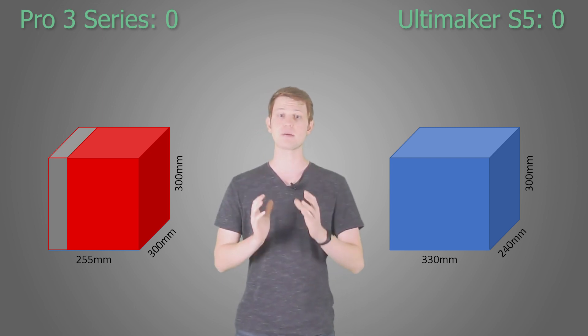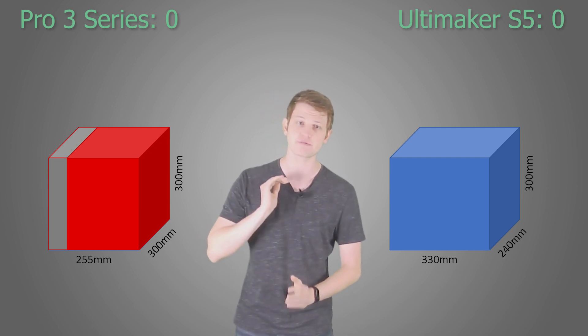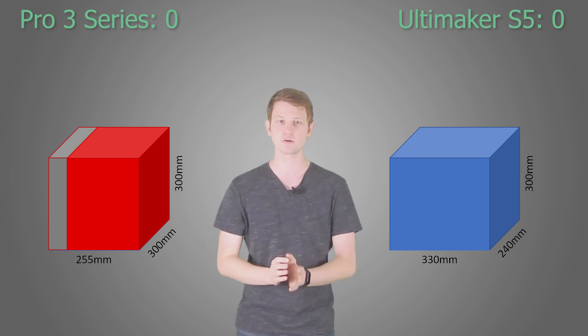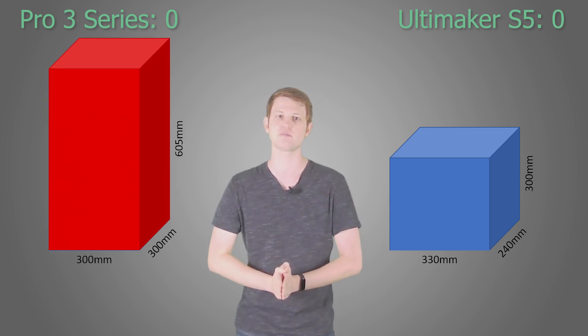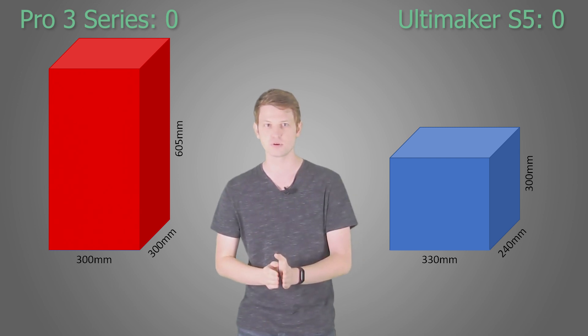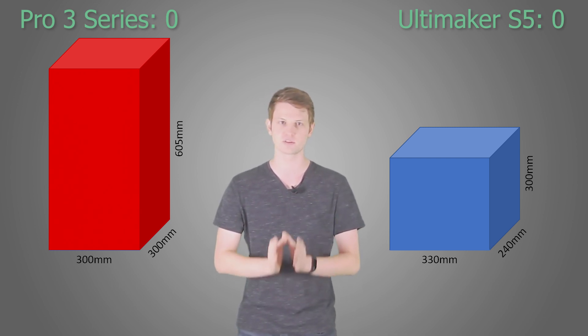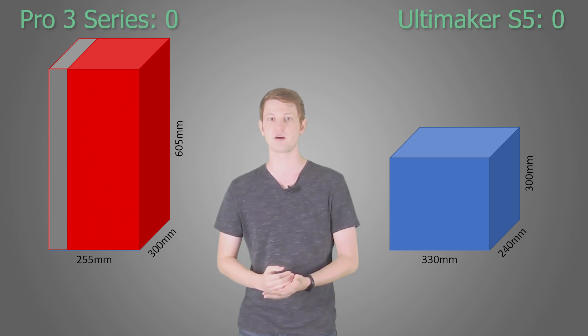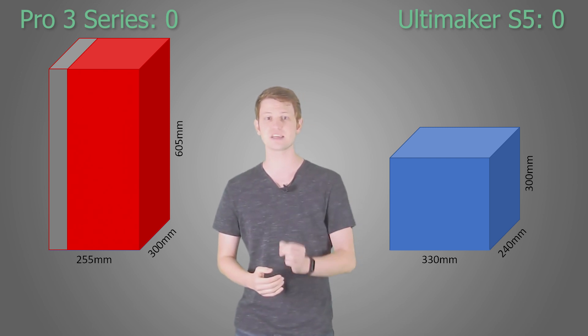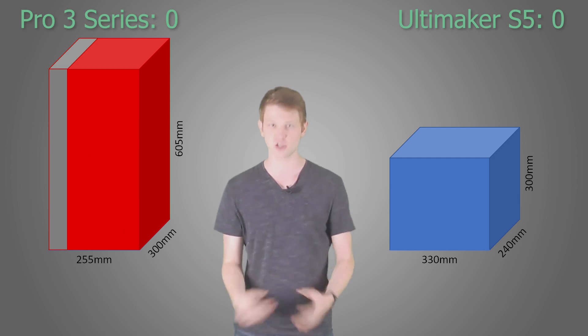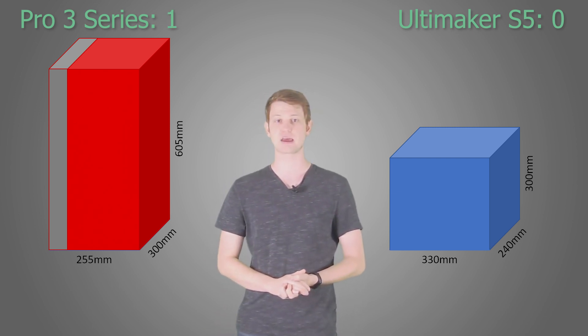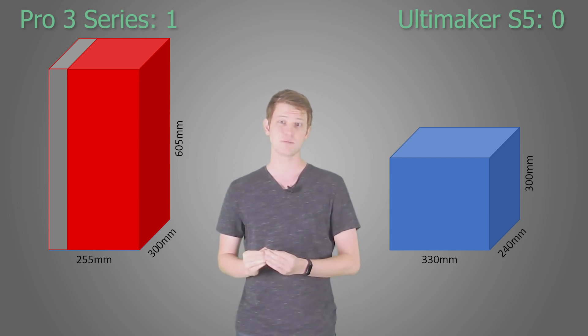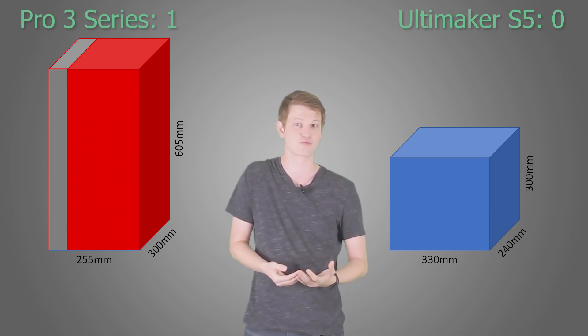However, the Pro 3 Plus adds another 30.5 centimeters along the Z-axis, for a whopping 30 x 30 x 60.5 centimeters in single extrusion mode, allowing for 54.45 liters of build volume. In dual extrusion mode, this again shrinks a little to 25.5 x 30 x 60.5 centimeters, but that is still 46.28 liters. The Ultimaker can't even get close to that. Now it is of course always dependent on your parts and specific application whether you really need that much Z-height, but that's when you could just get the base model Pro 3 instead.